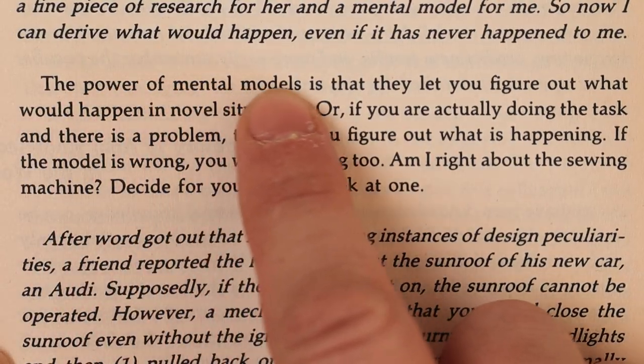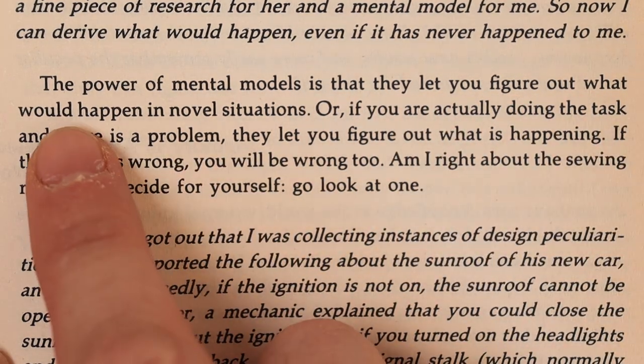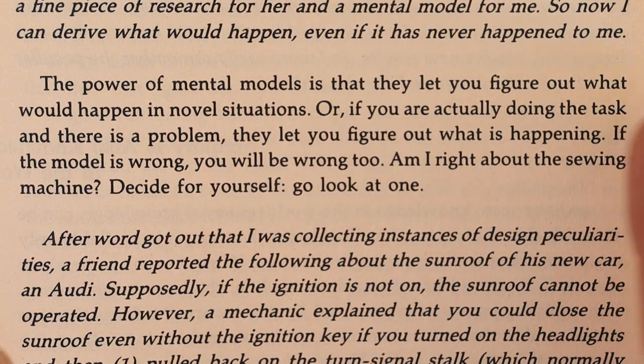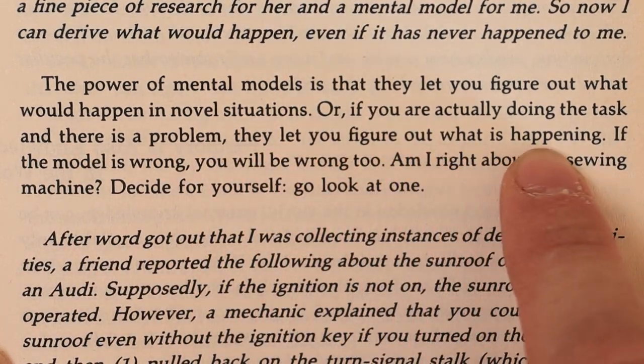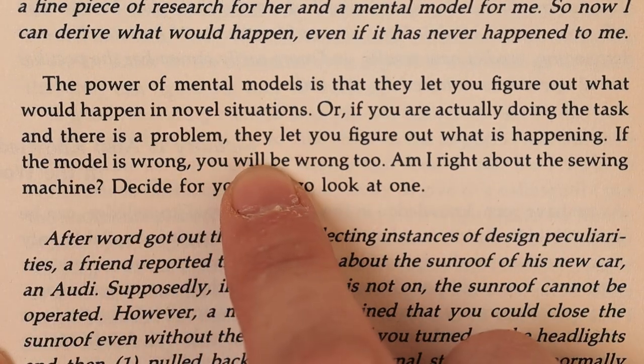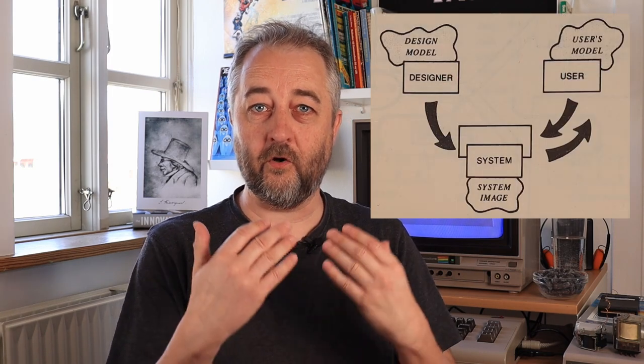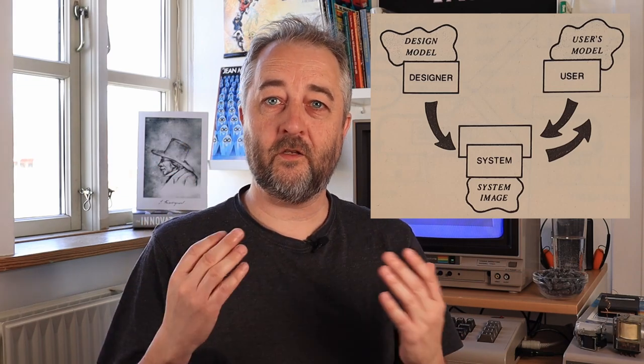Mental models are necessary to understand anything at all, to be able to think about complicated systems. They're always different — not only from the actual system, but also between the designer and the user. The designer wants to protect the user from the underlying complexity and has thus built a system that presents a system image a bit different from how it actually is. And that is perfectly okay, because the mental model still helps us understand what happens in the system when we use it, especially when we want to try something new, when we want to learn. As Norman himself puts it, the power of mental models is that they let you figure out what would happen in novel situations, or if there's a problem, they let you figure out what is happening.